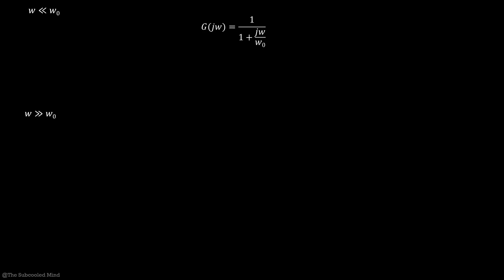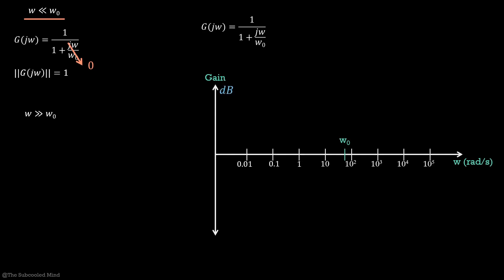So we check out different ranges of omega. First, consider the case when ω is much much less than ω₀. We can ignore the second term in the denominator compared to 1, and hence the gain becomes 1. In a Bode plot, frequency on the x-axis is plotted in log scale and the gain is in decibels. To convert any magnitude to decibels, we take the log of its value and multiply by 20. For example, a gain of 1 corresponds to 0 dB, and a gain of 10 corresponds to 20 dB. In our example, the gain becomes 0 dB.